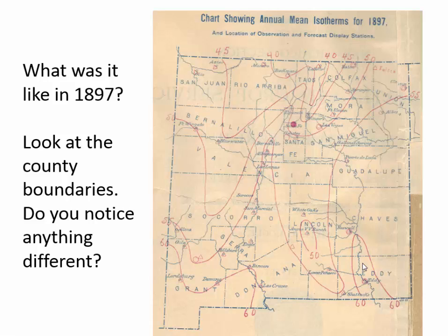In terms of records, records go back quite a while. But as you go further back, you're getting less and less data because there weren't very many cities in New Mexico. This is actually a map from 1897. The question was: what was it like in 1897? If you look at the county boundaries, do you notice anything different? Look at Dona Ana — it's quite a bit different than it is now.